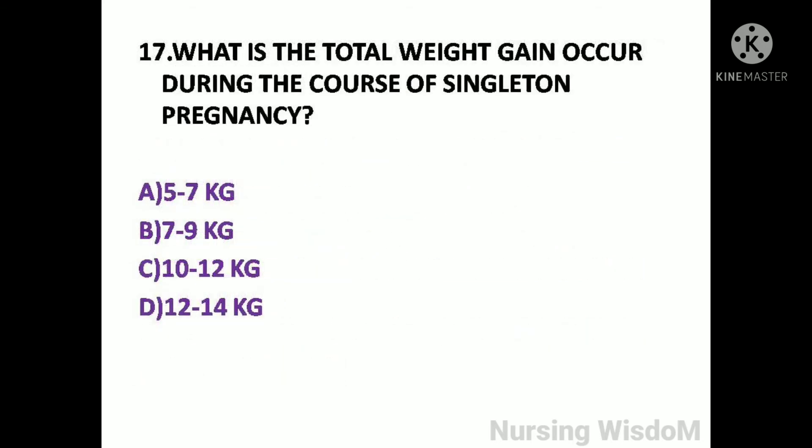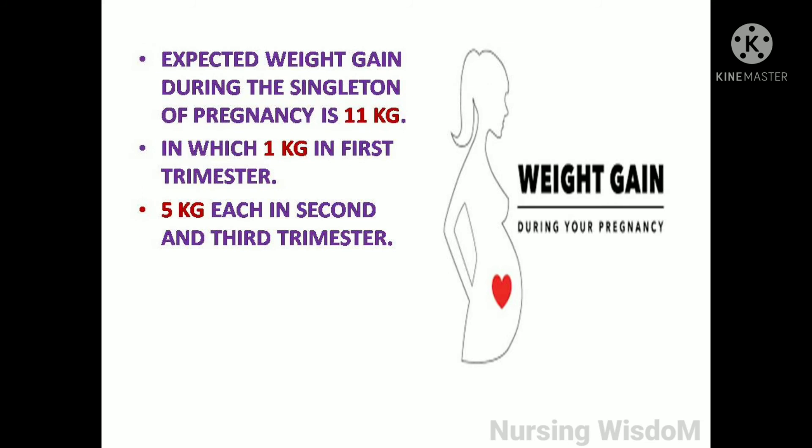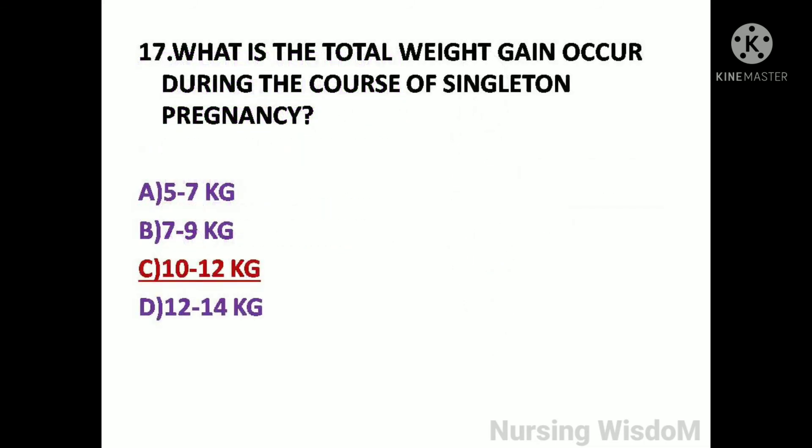Next question: What is the total weight gain during the course of a singleton pregnancy? Option A: 5 to 7 kg; option B: 7 to 9 kg; option C: 10 to 12 kg; option D: 12 to 14 kg. Expected weight gain during a singleton pregnancy is 11 kg — 1 kg in the first trimester, and 5 kg each in the second and third trimester. So here the answer is option C, 10 to 12 kg.